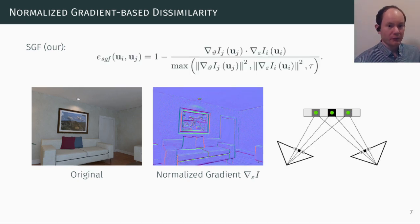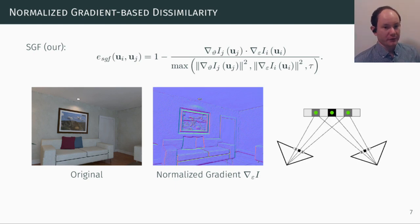Hence, we combine the dot product with a magnitude dependent scaling term. Scaling with the maximum of the squared gradient norms ensures that gradients with similar magnitude and orientation will obtain a low score during minimization.